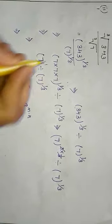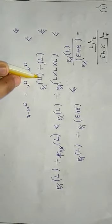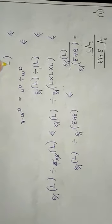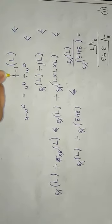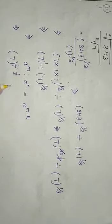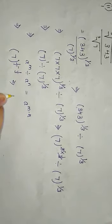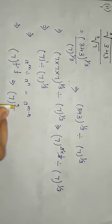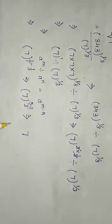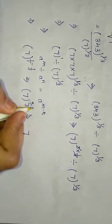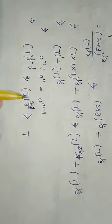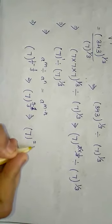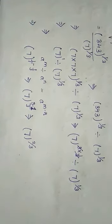Since they have the same base, the powers are going to subtract. Then it can be written as 7 to the power (1 - 1/3). Similarly I'll take LCM of the power, then 7 to the power (3 - 1)/3, which is 2/3.